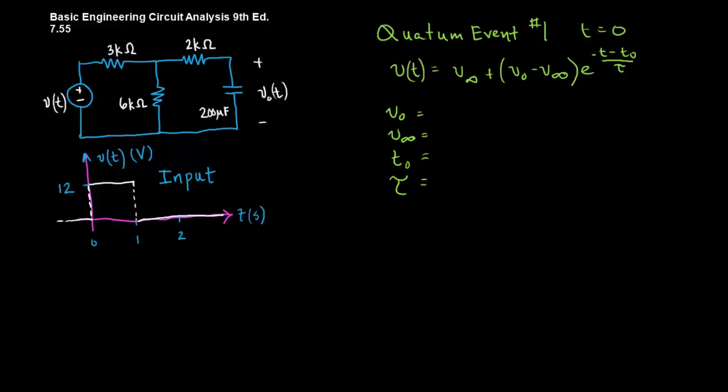We'll start with tau. To do tau, remember we look for our thevenin. Our thevenin, in this case, will treat the voltage source like a short. The 3k and the 6k are in parallel, and they get combined into a 2k resistor. 2k plus 2k is 4k, and 4k times 200 microfarads will give you a time constant of 0.8 seconds.